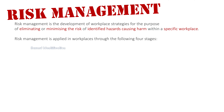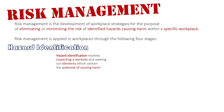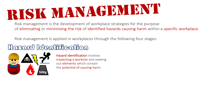The first stage is identifying the hazards. Hazard identification involves inspecting a worksite and seeking out the elements which contain the potential to cause harm. We need to assign an individual such as the HSR, or bring someone in to look around the workplace and see what hazards could cause harm — things like electrical hazards, heavy weight, flammable materials, trip hazards, or poisonous substances.